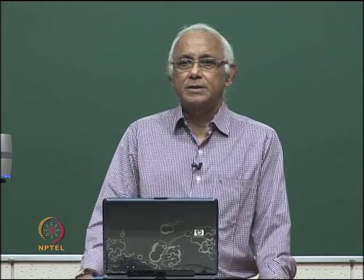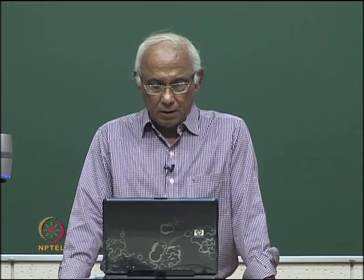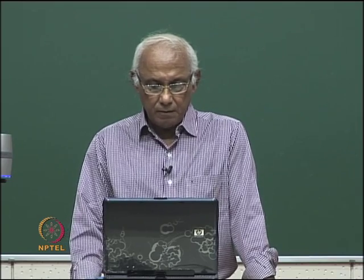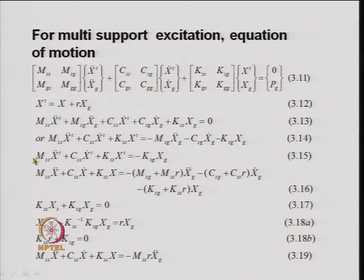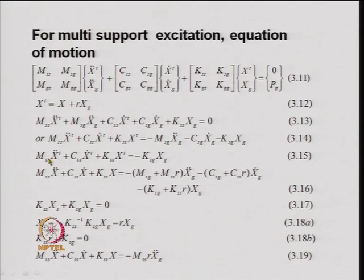In the previous lecture, we were discussing about the multi-degree of freedom system with multi-support excitations. We were looking into the equation of motion. The equation of motion can be written in two different forms. One is in terms of the total displacement, in which all the quantities on the left-hand side are in terms of the total displacement, total acceleration, and total velocity.